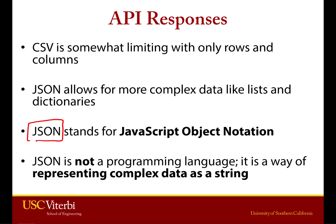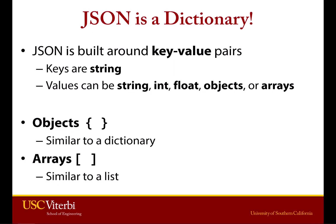JSON stands for JavaScript Object Notation. Note that this is not JavaScript — we're not learning JavaScript. The name is sort of a misnomer; it's just a text file like CSV. JSON is actually a dictionary. Dictionaries are built around key-value pairs, and JSON is built around key-value pairs, so it fits really well with Python dictionaries. The keys are going to be strings, and the values are going to be string, int, float, or objects (which we can think of as a dictionary), or arrays (which is another way of saying lists).